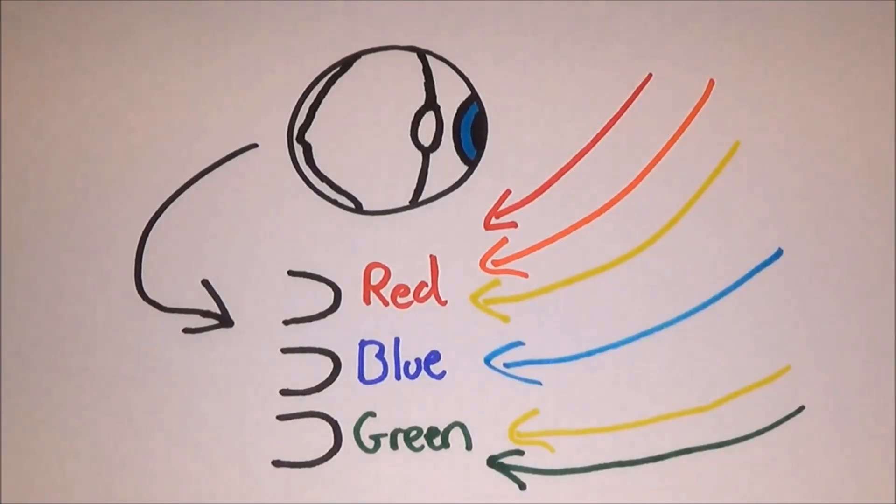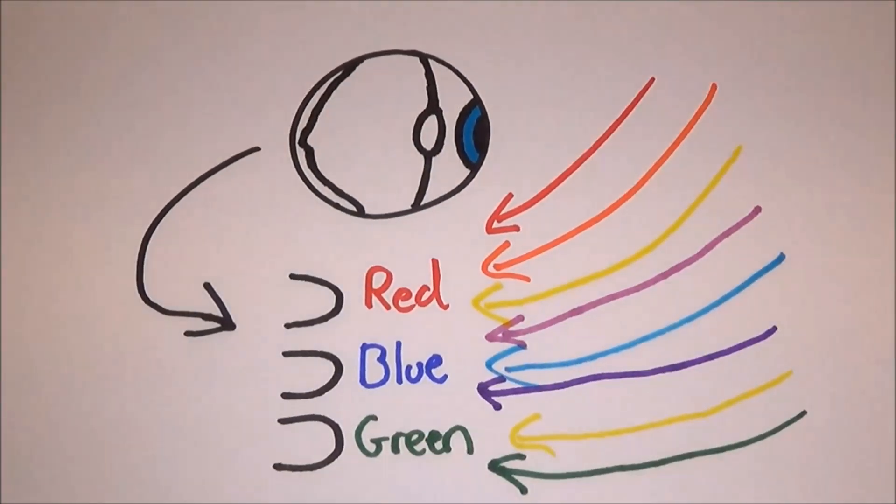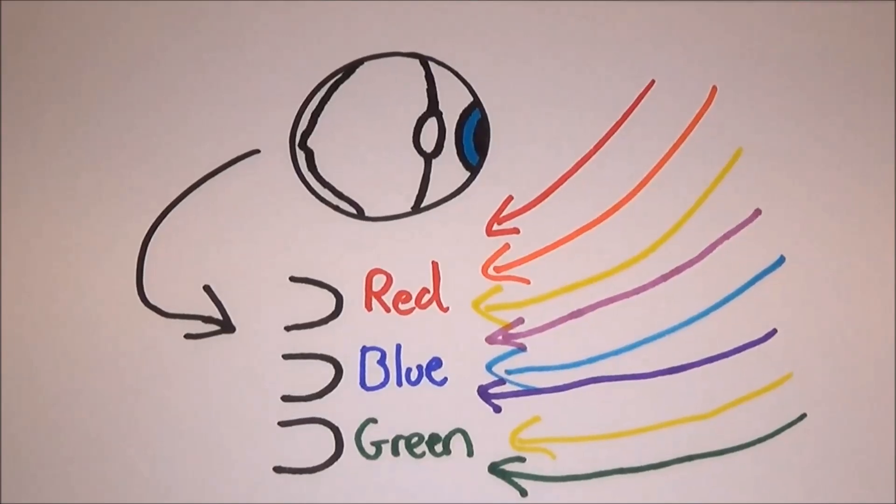The blue cones respond to the blue, the indigo and the violet light. If there was no indigo and violet, the sky would be a greeny bluey colour. But with this combination, we get our brilliant blue.